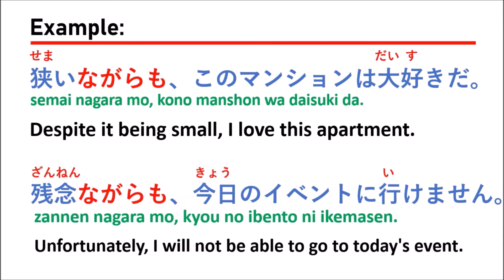In the first example, we use the i-adjective semai, which means 'small.' Semai nagaramo — so when you use an i-adjective with nagaramo, you just use the standard form. Semai nagaramo, kono manshon wa daisuki da means you like the apartment even though it is small.